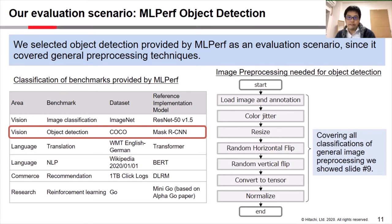Please look at the right figure. It indicates the image preprocessing needed for object detection. As you can see, it covers all classifications of general image preprocessing such as emphasizing, augmenting images, and deleting unused features, as we showed in the previous slide.